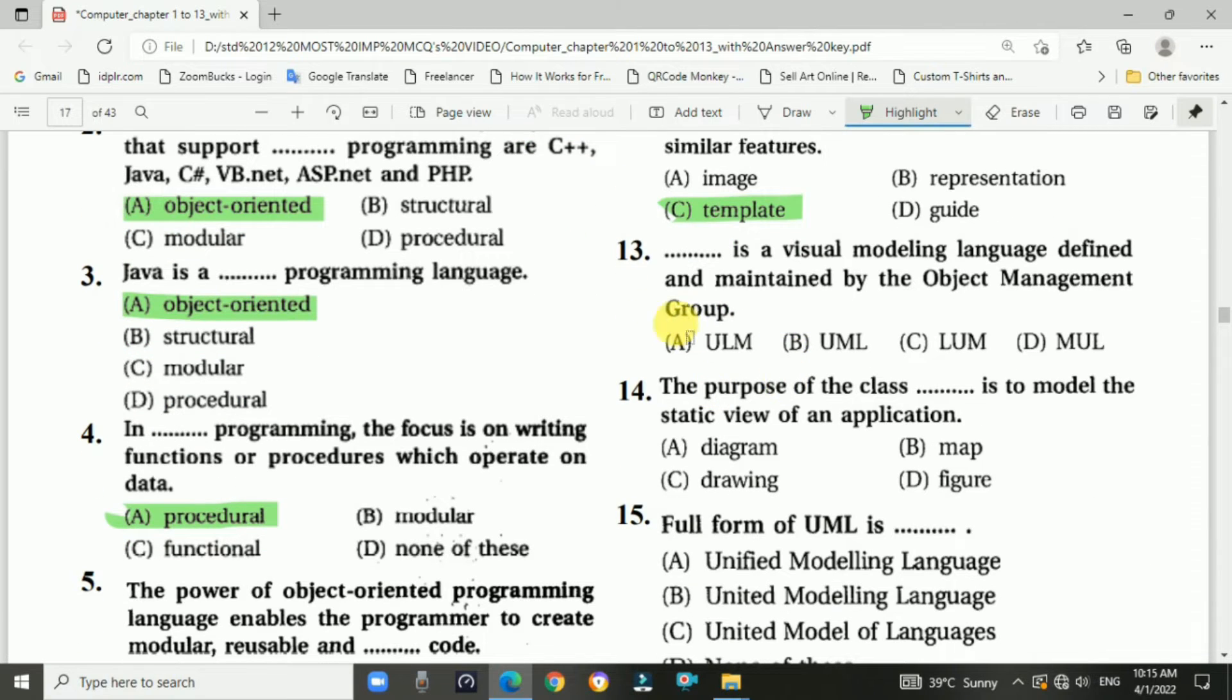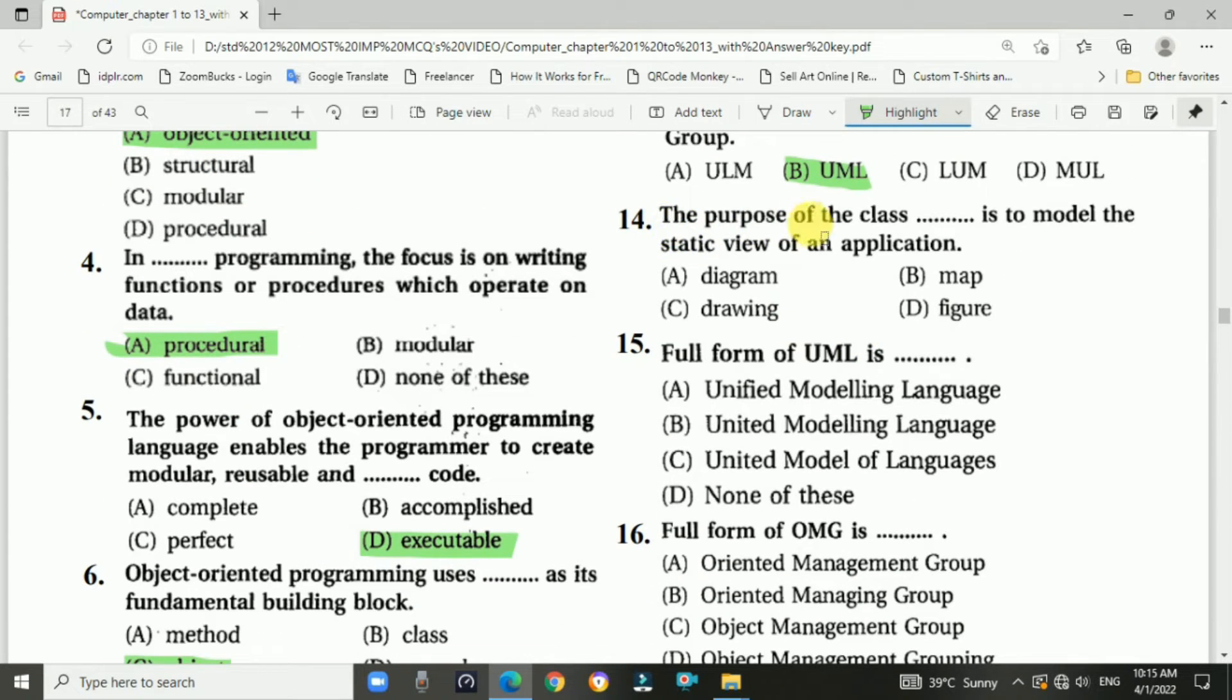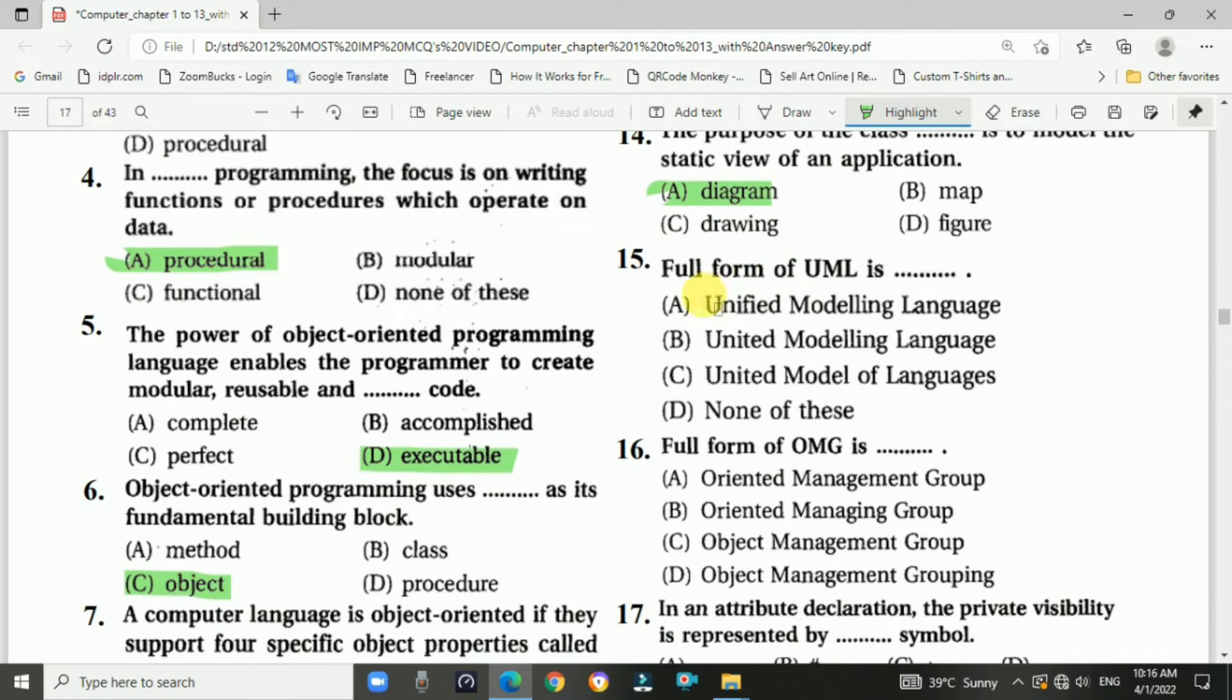Question number thirteen: Blank is a visual modeling language defined and maintained by the Object Management Group. Answer is B, UML. Question number fourteen: The purpose of the class blank is to model the static view of an application. Answer is A, diagram. Question number fifteen: The full form of UML is Unified Modeling Language, option A.